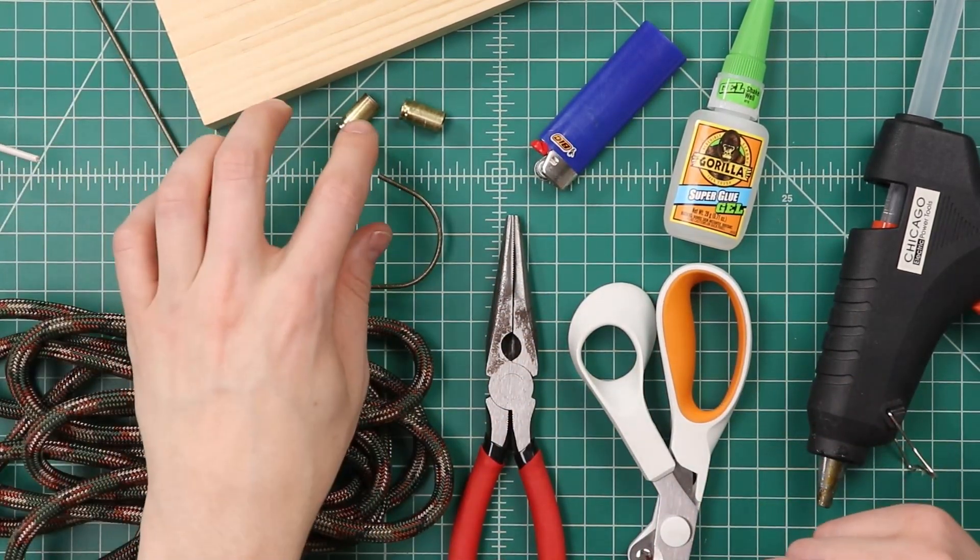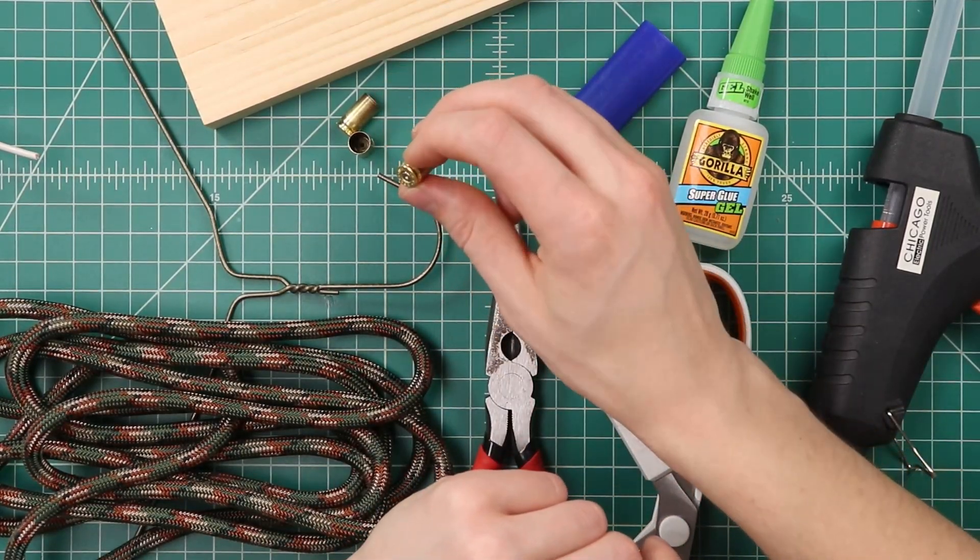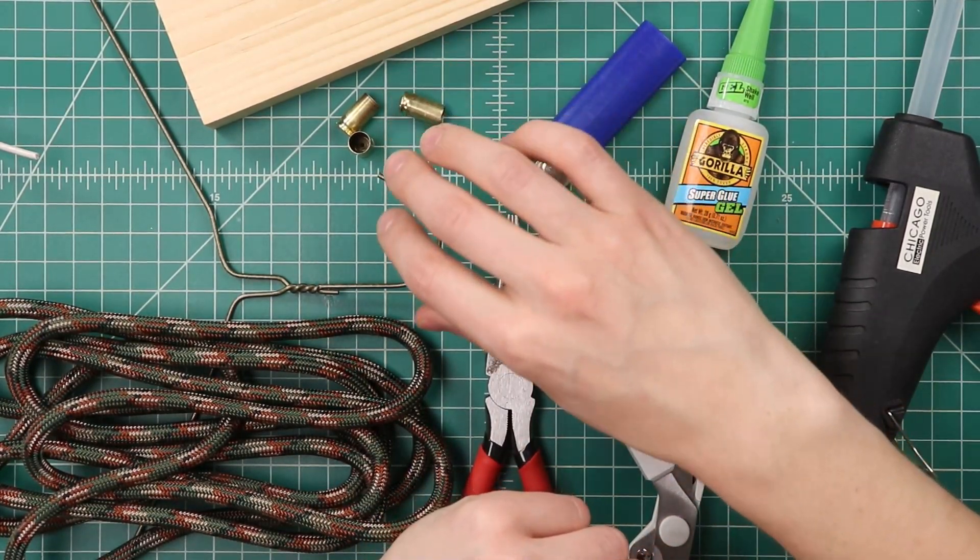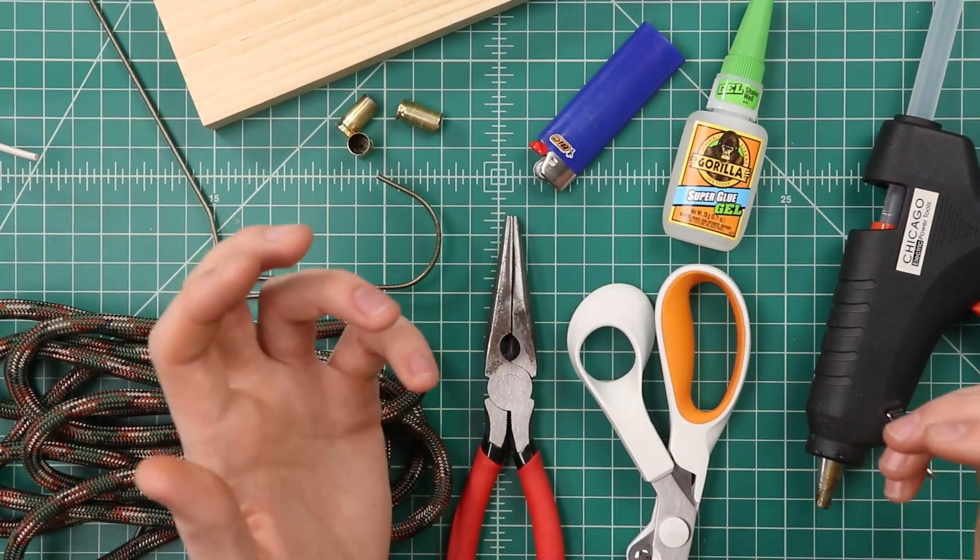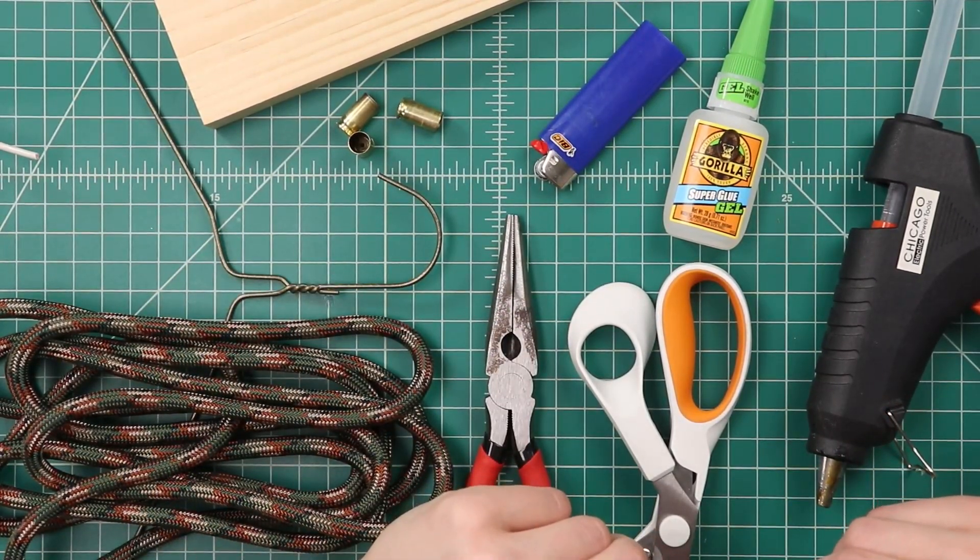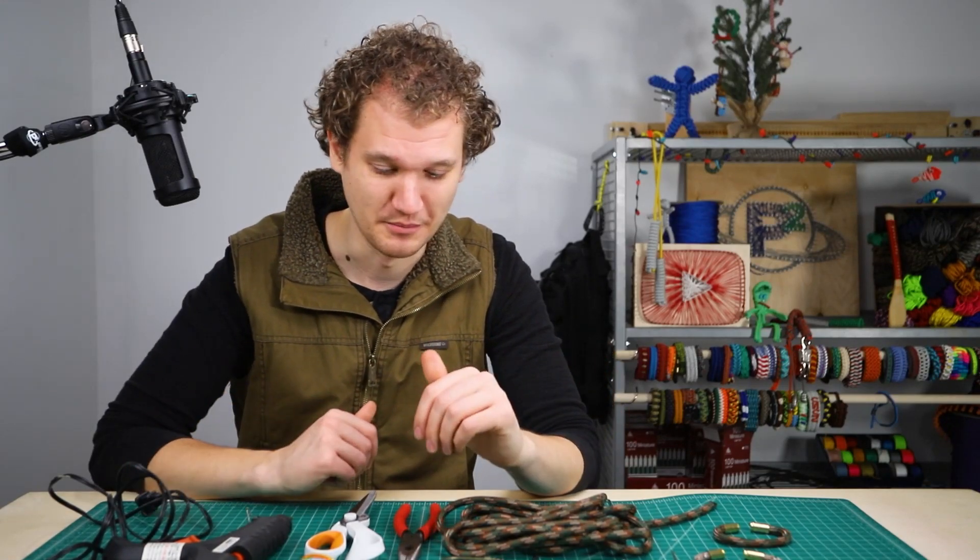You'll also need some shell casings. I've got 9mm, but 40 caliber would also work. You can probably find those at a local gun range. I'm sure they'd give you just a couple, but if you're making this, I'm assuming you probably do your own target practice, so those shouldn't be too hard to come by.